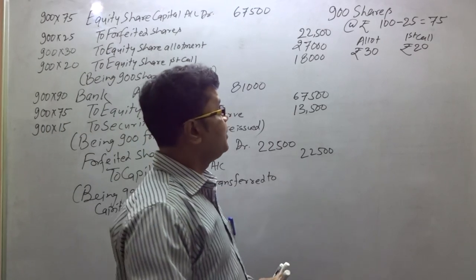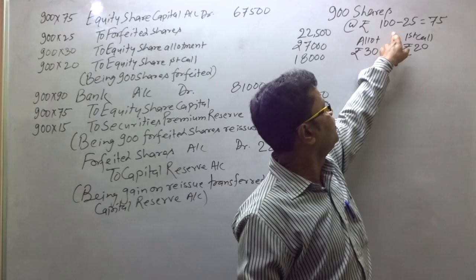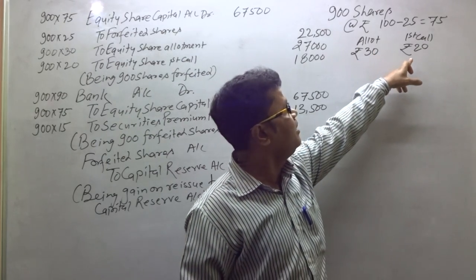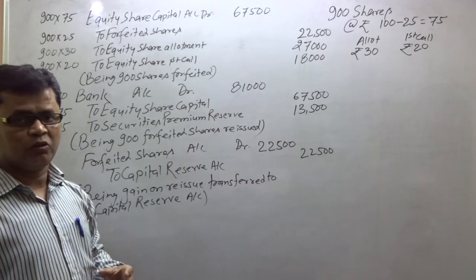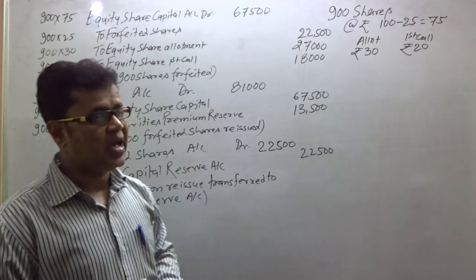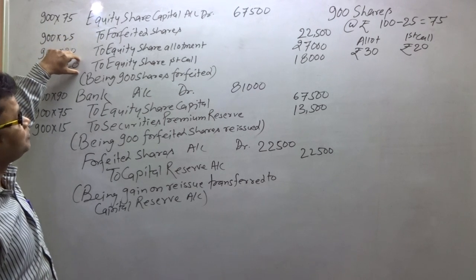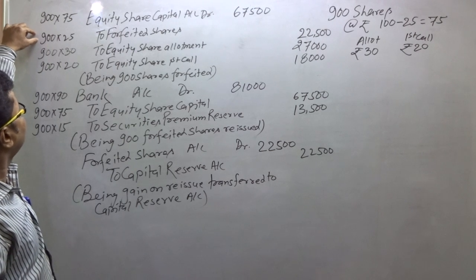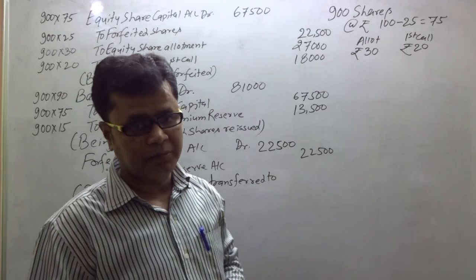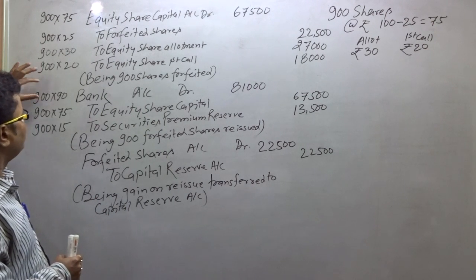On this basis, let's see: the company had forfeited the shares, meaning the called-up amount was ₹75. The share face value was ₹100 but the company had only called ₹75. That particular shareholder had not paid the amount. So: equity share capital 900×75, allotment 900×30 = ₹27,000, first call 900×20 = ₹18,000. The amount that was paid goes to forfeited shares account. The unpaid amount: 900×25. The company reissued at ₹90, paid-up value ₹75.